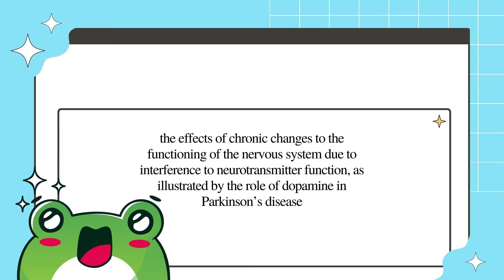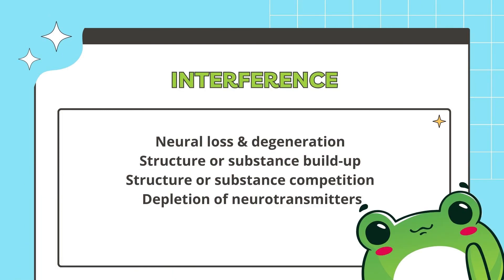The final dot point on the study design is the effects of chronic changes to the functioning of the nervous system due to interference to neurotransmitter function, as illustrated by the role of dopamine in Parkinson's disease. A range of interferences can occur in neurotransmission. Neural loss and degeneration means there are not enough neurons to produce neurotransmitters. Structure or substance buildup can inhibit transmission and reception of neurotransmitters. Structures or substances can also compete with neurotransmitters at receptor sites, inhibiting neural reception. Additionally, bacteria or disease can deplete neurotransmitters before they can perform their function.